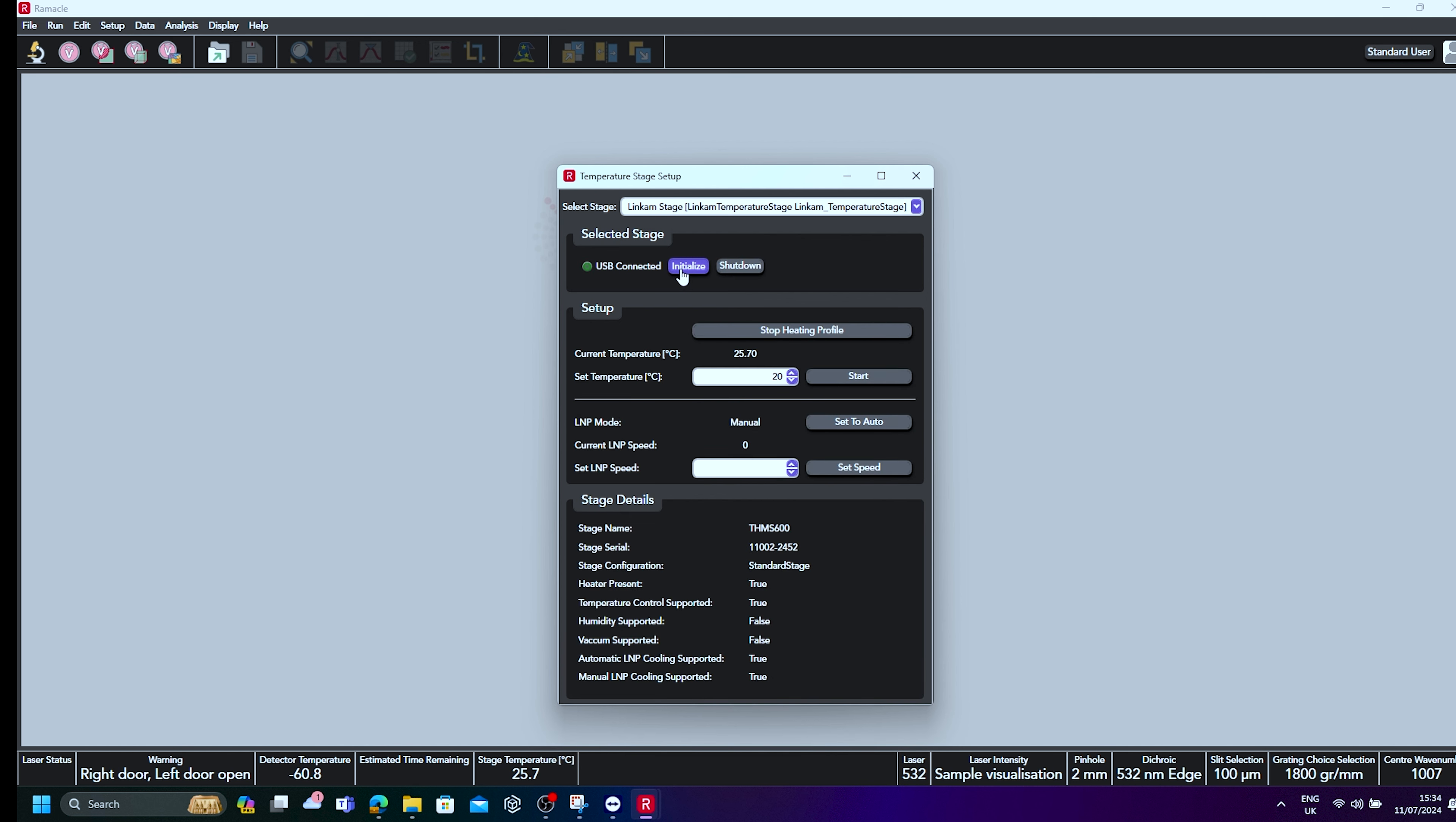Before beginning measurements, it is essential to purge the stage with nitrogen gas. To do this, set the temperature to 30 degrees in Ramico, set the LNP mode to Manual and set the LNP Speed to 100 to begin nitrogen flow into the stage.